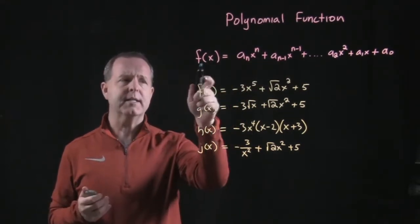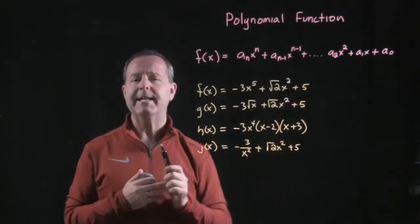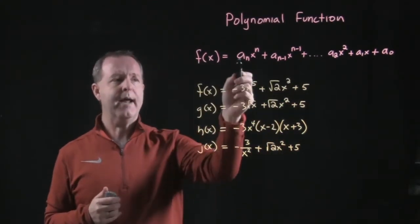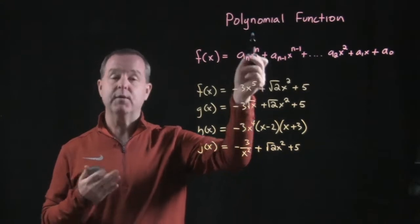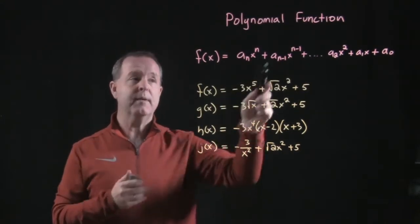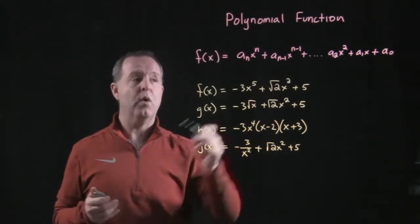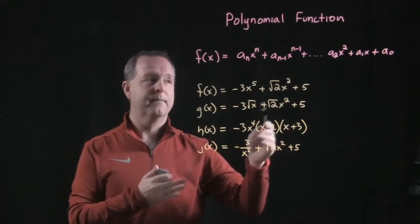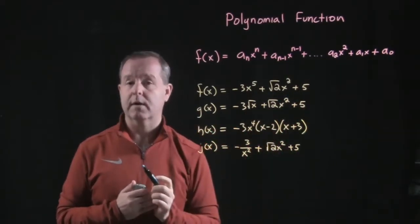Basically, a polynomial function is a collection of cascading terms, where I have some a sub n, x to the n, another term, some a sub n minus 1, x to the n minus 1, and so forth, all the way down to a constant.